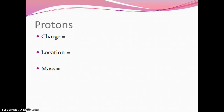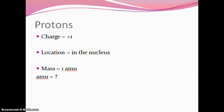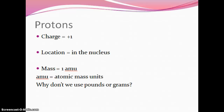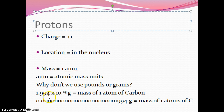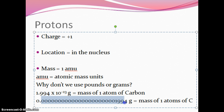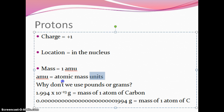Let's talk about protons: charge, location, mass. The charge is positive one. The location is in the nucleus — the center of the atom. The mass of a proton is one AMU, which stands for atomic mass unit. Why don't we use grams? Because the mass of one atom of carbon is 1.994 times 10 to the negative 23rd grams — that's crazy small. So instead, scientists said let's just call it 1 and make up a unit called atomic mass units.